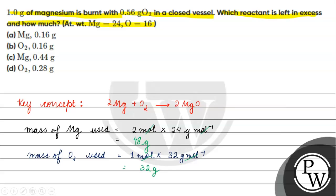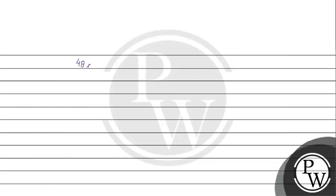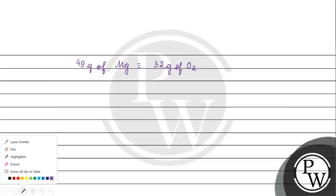We will see that 48 grams of magnesium react with 32 grams of oxygen. So we have 1 gram of magnesium.